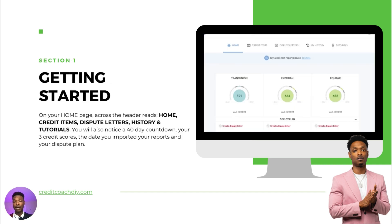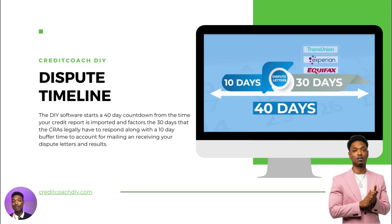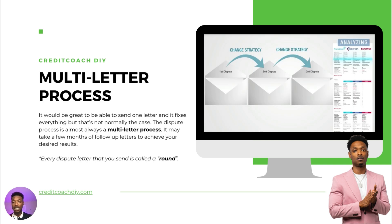Your dispute timeline — at the top of your screen, under the home, credit items, dispute letter, my history, and tutorials tab, there's a number that says 40. That's a 40-day countdown timer. That countdown timer starts when you mark your dispute letter as sent. It's a 40-day countdown timer because we give you 40 days — 10 days to send your letters to the bureaus and for the bureaus to respond, because they technically have 30 days to complete their investigation. The software accounts for that time before you need to reimport your newest monthly credit report, check for results, and send any other dispute letters.